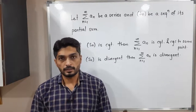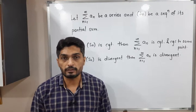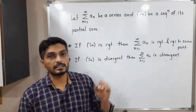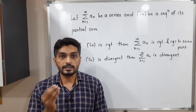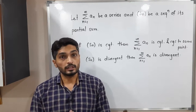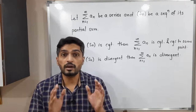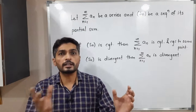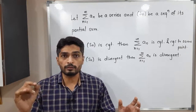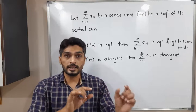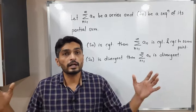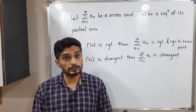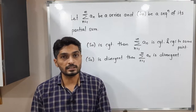Let us discuss this concept: when do we say a given series is convergent and when is it divergent? Consider a simple series summation a_n. If the sum of those infinite terms — a1 plus a2 plus a3 plus a4 and so on — is finite, we say the series is convergent. If the sum is infinite, we say the series is divergent.